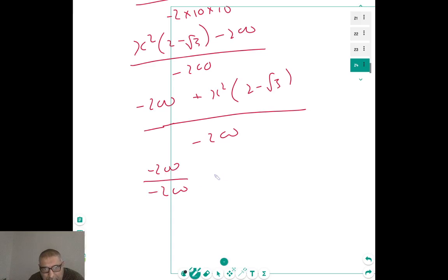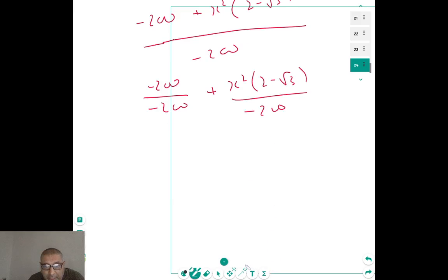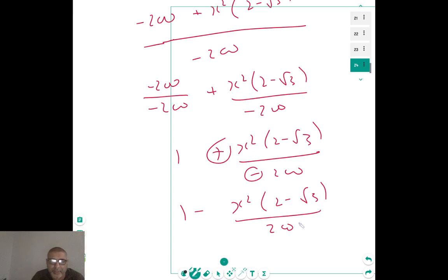2 minus root 3 over, to me, it's both the same thing. Right? If you don't get it, I've done another video, and I will do another video again explaining how we can split these fractions up. Minus 200 over minus 200 is 1 plus X squared 2 minus root 3 over minus 200. That really looks untidy, so I can change that to a negative, 2 minus root 3 over 200. And there I am, it's done.